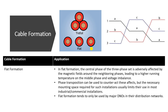The second formation is the flat formation. In the flat formation, the spaces between conductors are not all the same — the distance between two adjacent phases is the same, but the distance from the outer phase to the middle is different. The problem with the flat formation is the central phase: it is affected by the magnetic fields coming from both neighboring phases on either side.